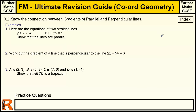What do we need to know about gradients of parallel and perpendicular lines? First, we need to think about the general equation y equals mx plus c. If you can rewrite an equation of a line in this form, you can always work out the gradient, which is the m value, and the y-intercept, which is the c value. For parallel lines, the gradients are equal — whatever m is, it will be the same for both lines.